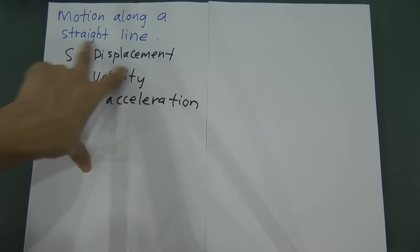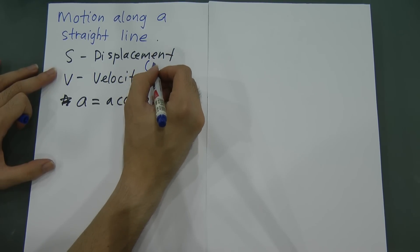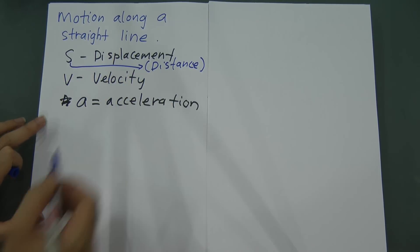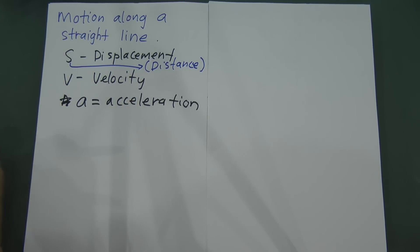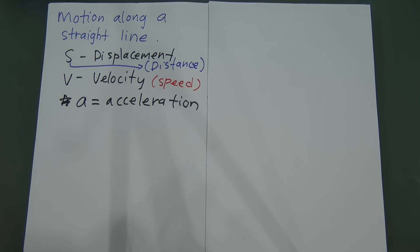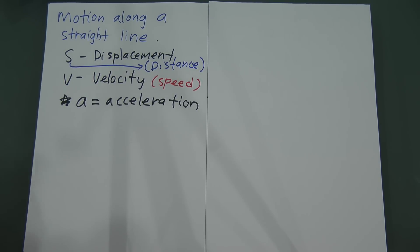Displacement s is highly related to distance. Velocity v is highly related to speed — velocity essentially means speed. So when a question says the particle stops, you know v equals zero because the speed becomes zero. For maximum velocity, dv/dt equals zero.